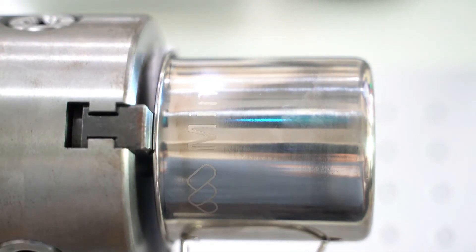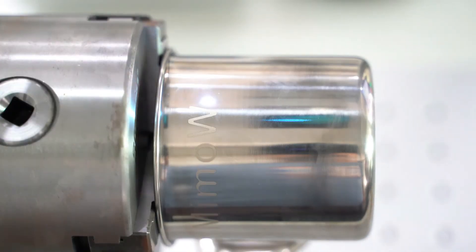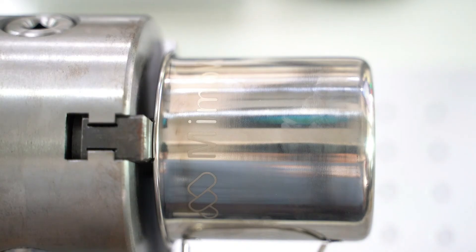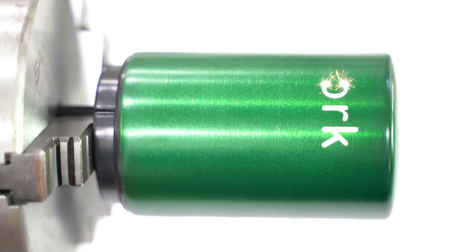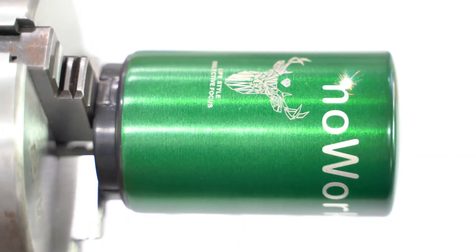The fiber laser marking machine can perform high-speed marking of parts without the use of ink and dyes. With the rotary attachment, you can engrave on a small object like an engagement ring—engrave it with your name.